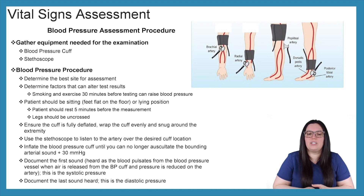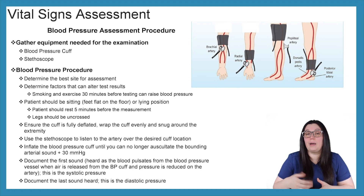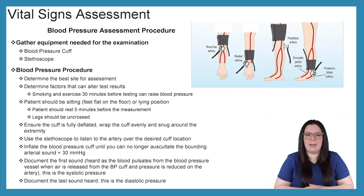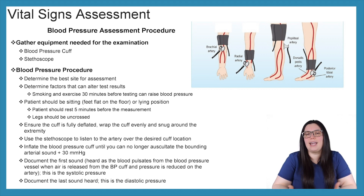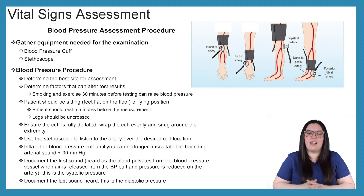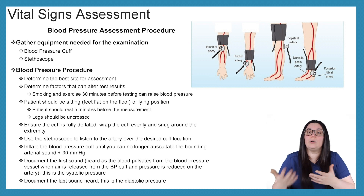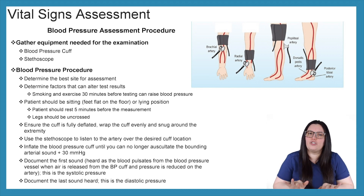The leg may be used if the brachial artery is inaccessible — the cuff is wrapped around the thigh when auscultating for the popliteal artery, and around the calf when auscultating for the posterior tibial artery. Next, determine factors that can alter test results, such as smoking and exercise 30 minutes prior to testing, as either will cause a rise in blood pressure. Patients should be sitting with feet flat on the floor or in a lying position, resting for approximately five minutes prior to obtaining the measurement. Make sure legs are not crossed.